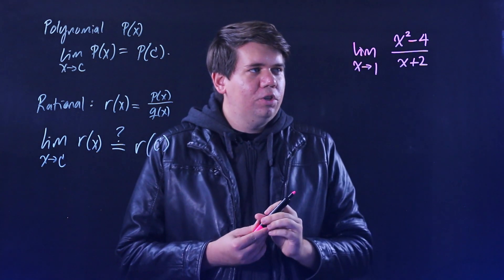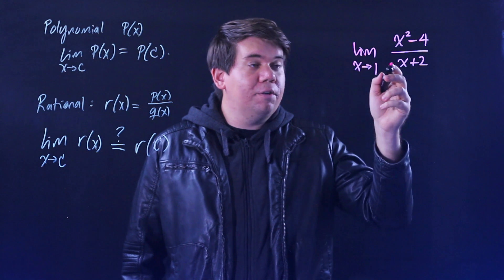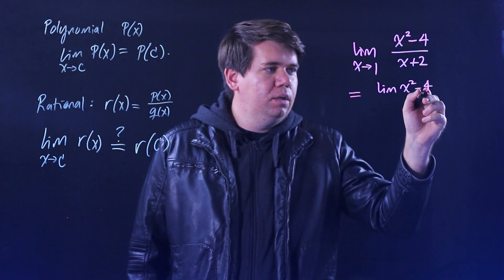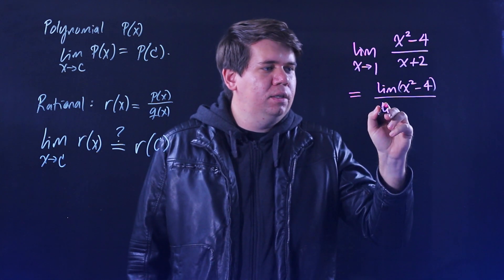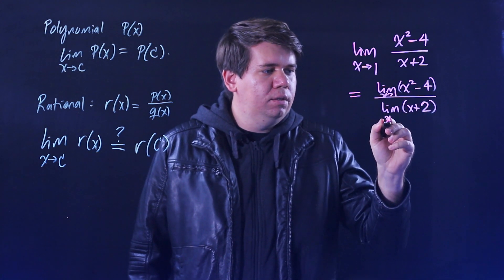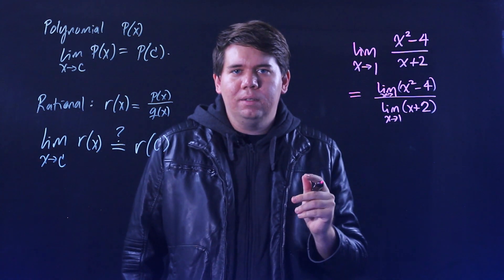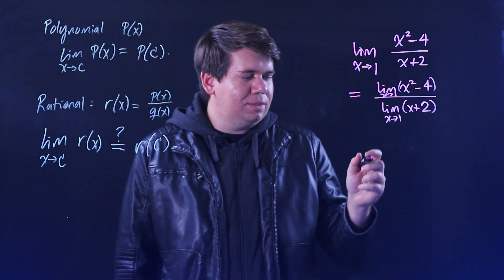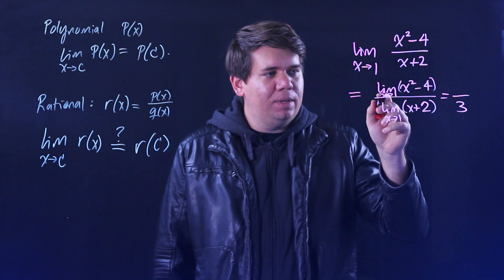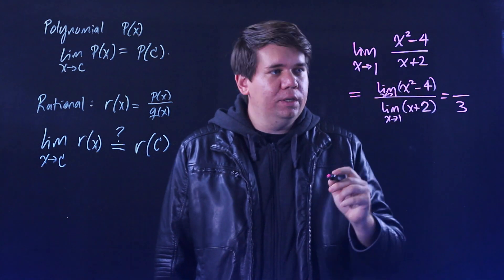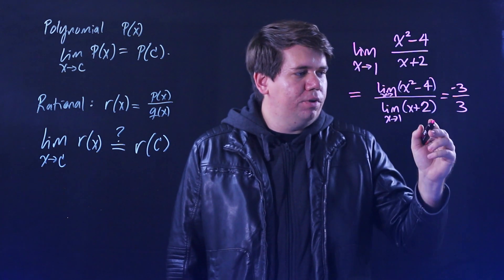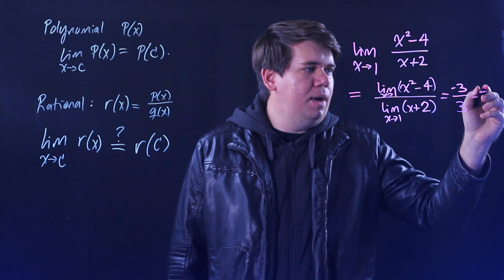You can start using your limit laws. The limit of a quotient is equal to the limit of the top divided by the limit of the bottom, as long as that bottom does not come out to be 0. If you break this down, the limit of the bottom — the limit of x plus the limit of 2 — comes out to be 3. On top, the limit of x squared minus the limit of 4: the limit of x squared becomes 1 squared. So it's 1 squared minus 4, which is minus 3, over 3.